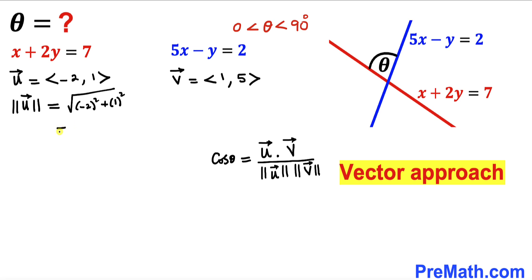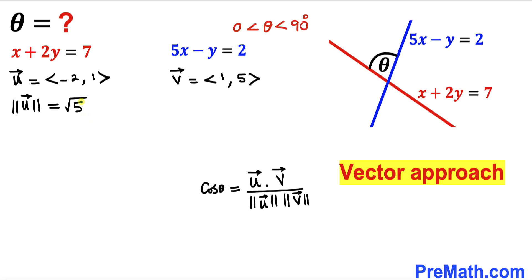Let's simplify: negative 2 squared is 4, plus 1, that is going to be equal to the square root of 5. So therefore the magnitude of vector u turns out to be the square root of 5.